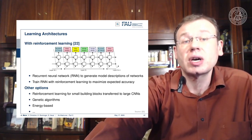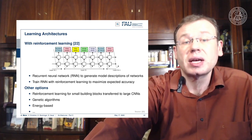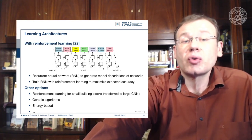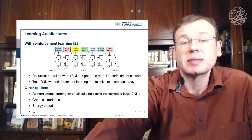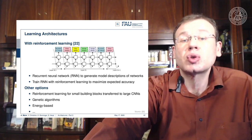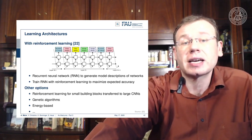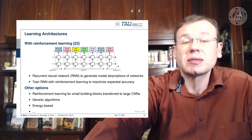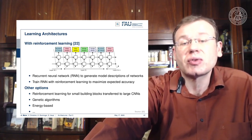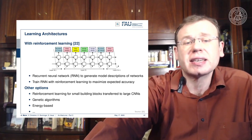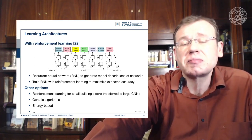One of the approaches, in reference 22, is using reinforcement learning: you train a recurrent neural network to generate model descriptions of networks, and train this RNN with reinforcement learning to maximize expected accuracy. There are also many other options — reinforcement learning for small building blocks transferred to large CNNs, genetic algorithms, and energy-based methods.